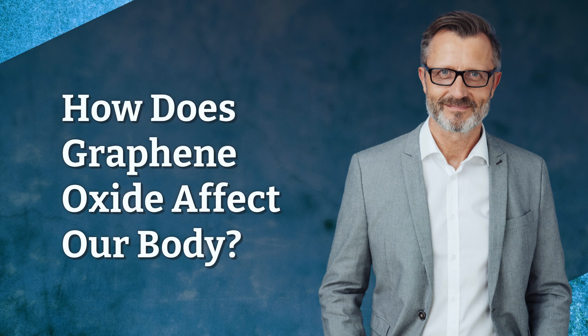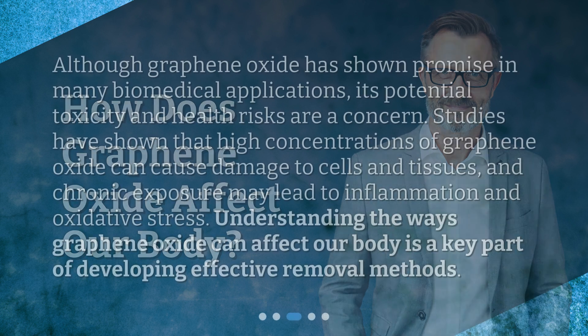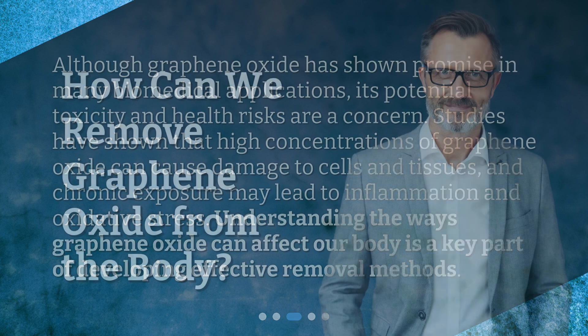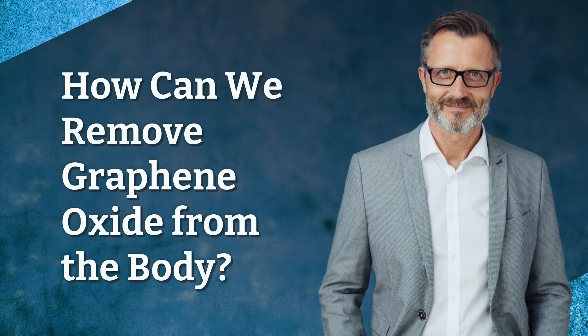How does graphene oxide affect our body? Although graphene oxide has shown promise in many biomedical applications, its potential toxicity and health risks are a concern. Studies have shown that high concentrations of graphene oxide can cause damage to cells and tissues, and chronic exposure may lead to inflammation and oxidative stress. Understanding the ways graphene oxide can affect our body is a key part of developing effective removal methods.